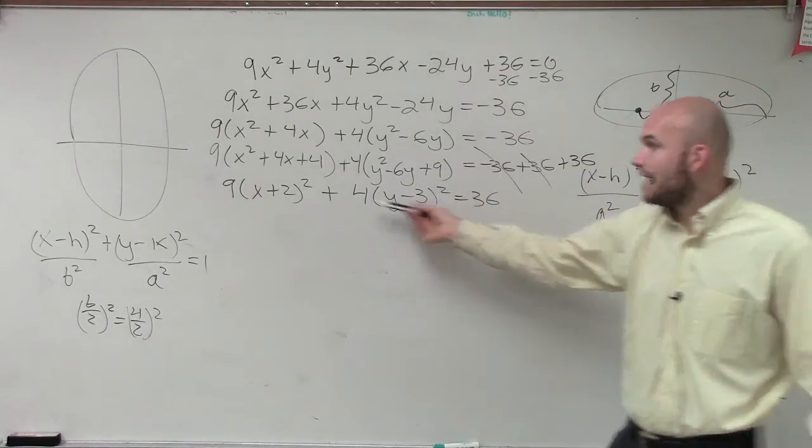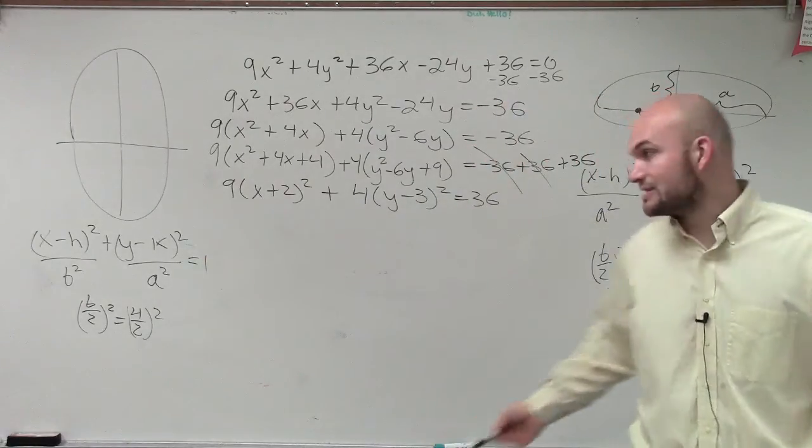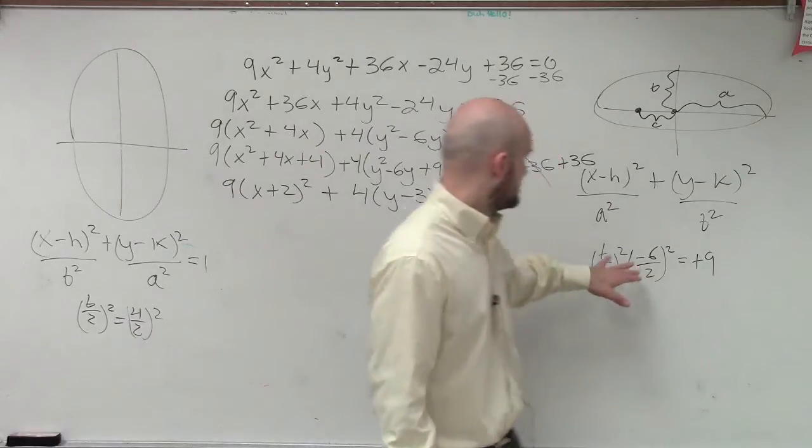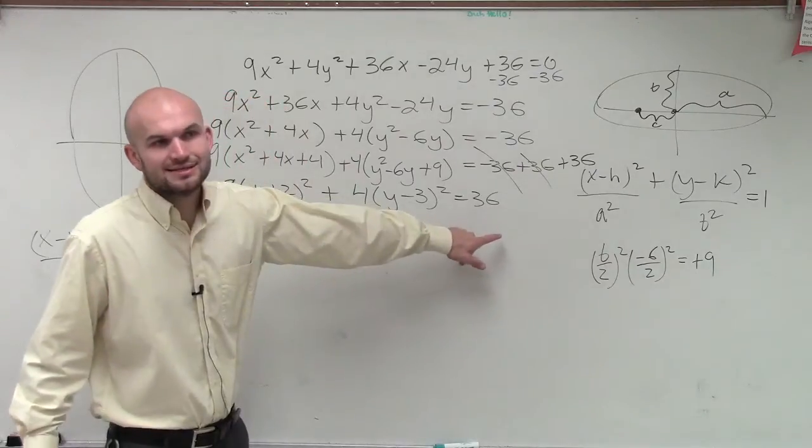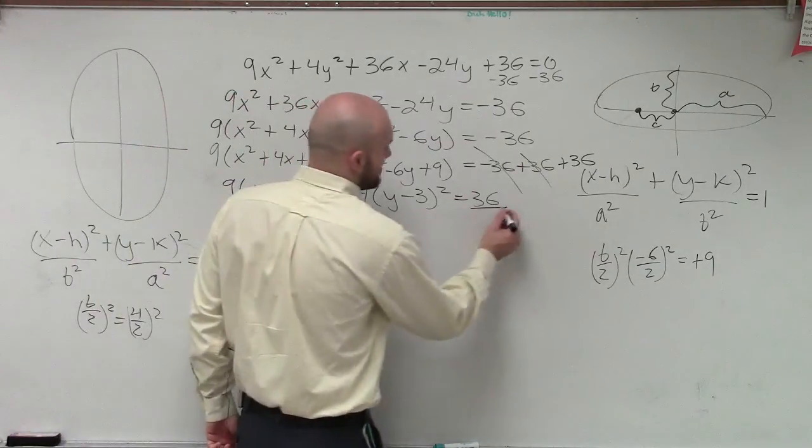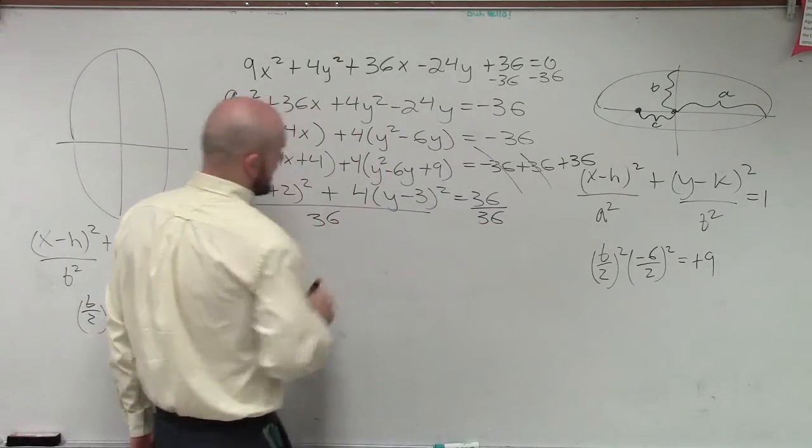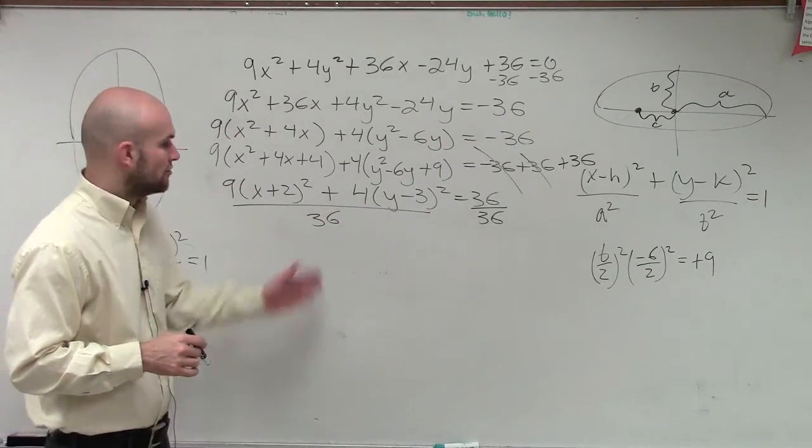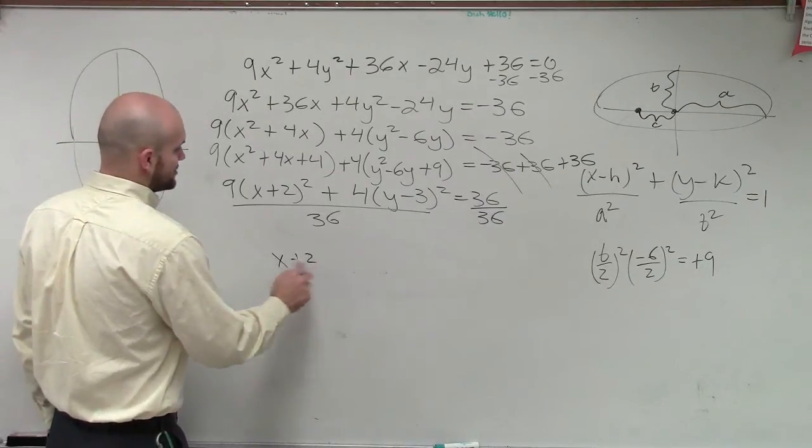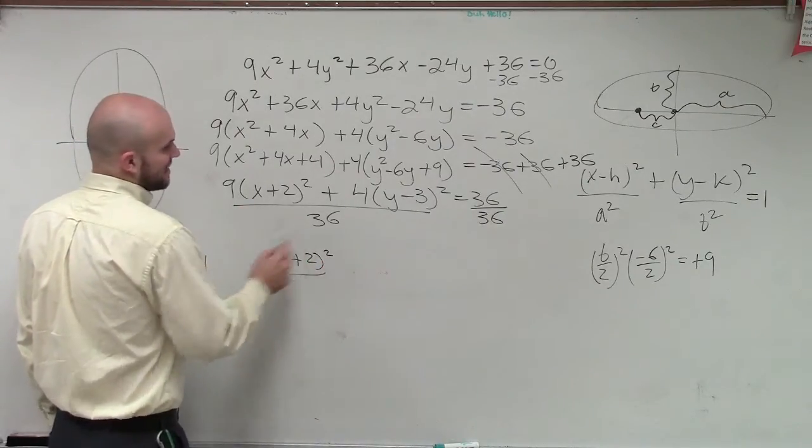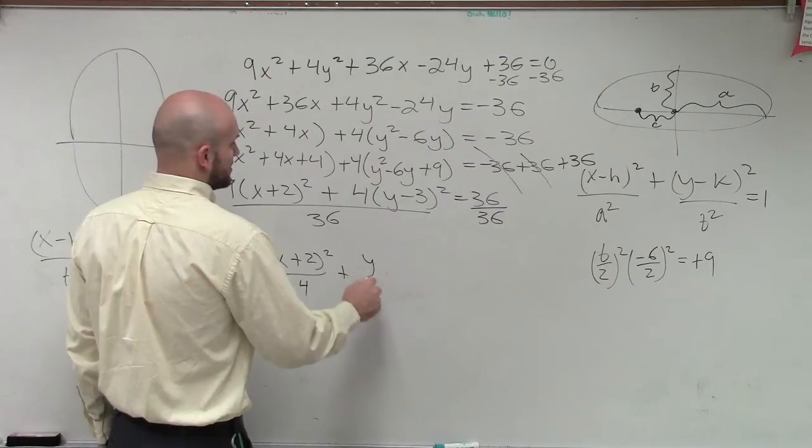By completing the square, now the numerators are looking pretty good, but I still don't have these denominators. To get to those denominators, each one of these equations equals 1. So I need this to equal 1. To get 36 to equal 1, I need to divide by 36. But whatever you do on the right side, you've got to do on the left side. Dividing the left side by 36, I'm left with (x + 2)² / 4 + (y - 3)² / 9 = 1.